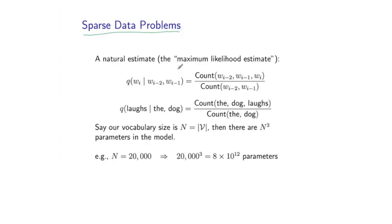A very natural estimate for a trigram language model is what is called the maximum likelihood estimate. So the general form is as follows. If I'm estimating the parameter q for some word wi, conditioned on previous words wi-2 and wi-1...